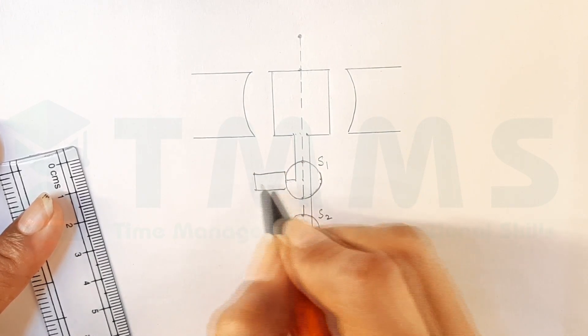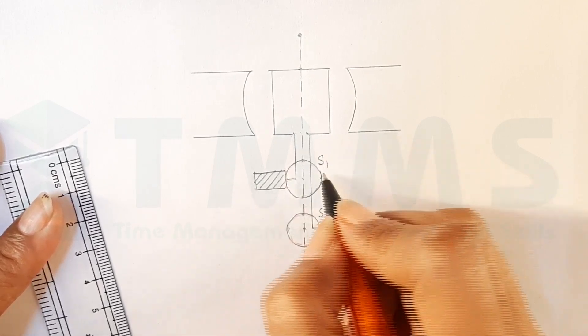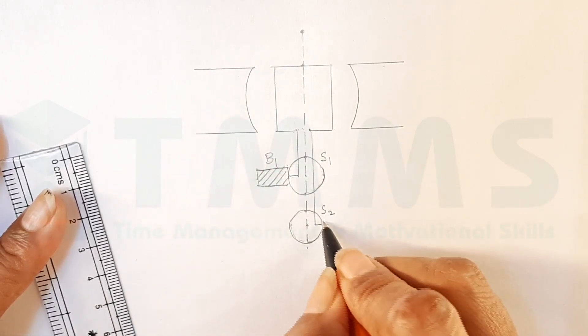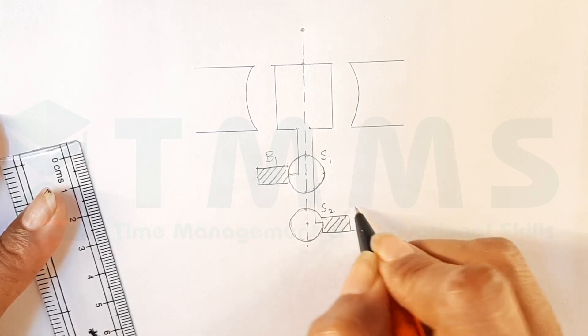So, we draw these carbon brushes like so. They should be snugly fitting against this S1. So, this is our carbon brush B1. And this side, we will show the carbon brush B2.